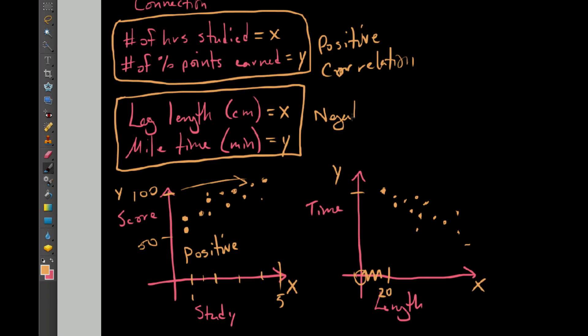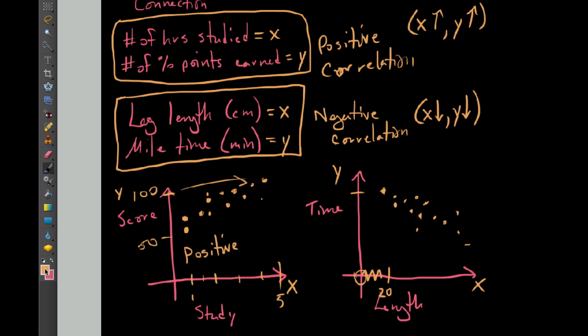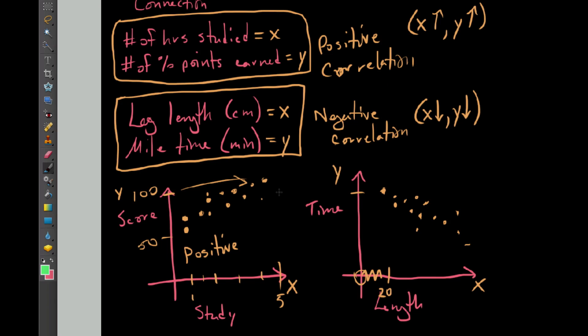So we would refer to any instance in which, I'll write this out here, correlation. A positive correlation, we said, as X goes up, Y also tends to increase, whereas negative correlation is X goes down, Y tends to decrease. And that's just what we mean by positive and negative correlation.